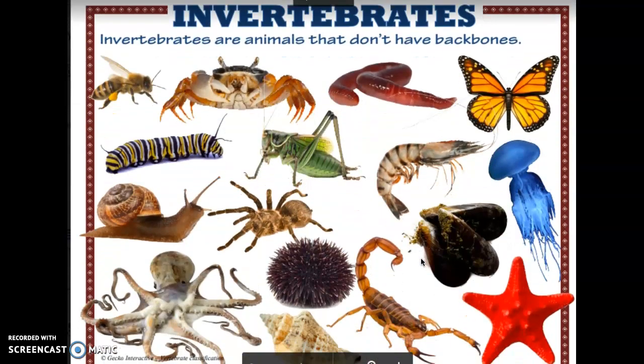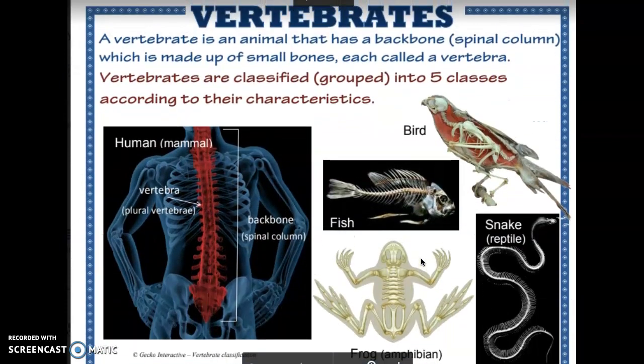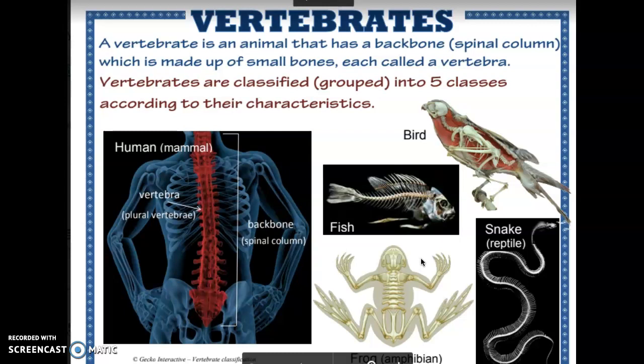Here are some examples of invertebrates, which are animals that do not have a backbone. You might see some animals here that you're very familiar with and others that you might not know as well. A vertebrate is an animal that has a backbone or spinal column, which is made up of small bones each called a vertebra. Vertebrates are classified or grouped into five classes according to their characteristics. Here you can see some x-rays or images of people and animals that have vertebrates.